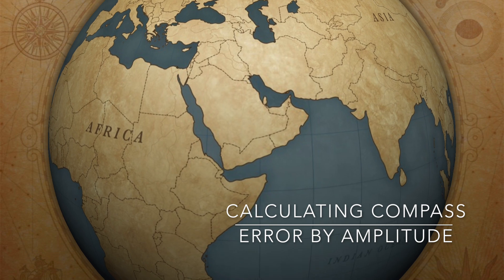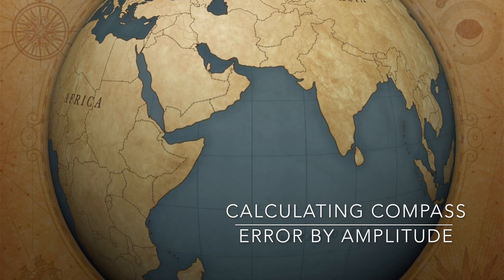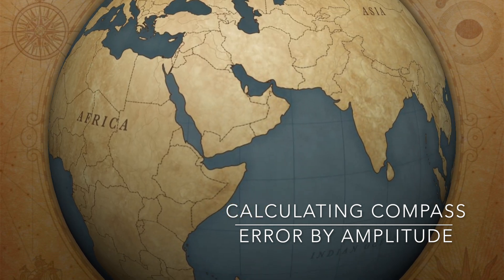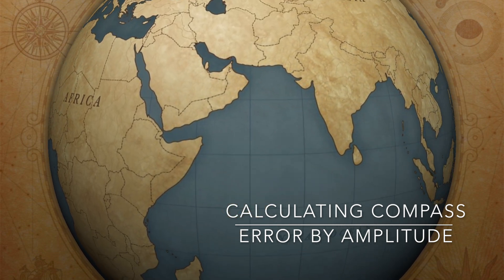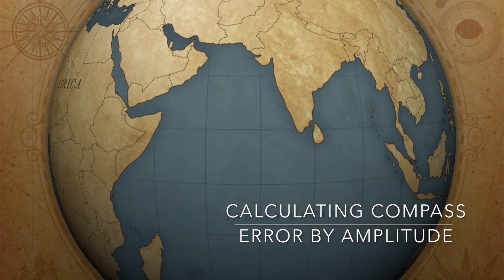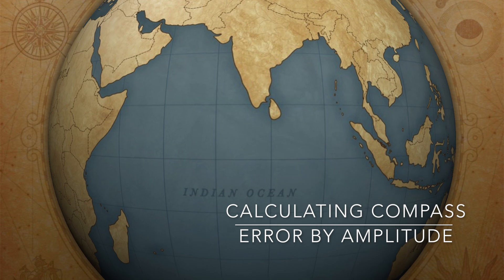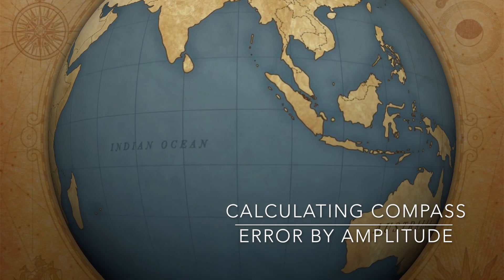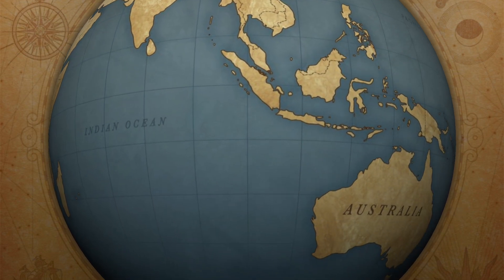Welcome to the next video in my Merchant Navy How To series. In this short video I'll be explaining how we can calculate the compass error using the much faster amplitude method and the key differences between using this method and the previously explained azimuth method.